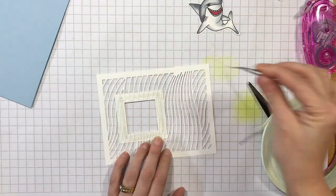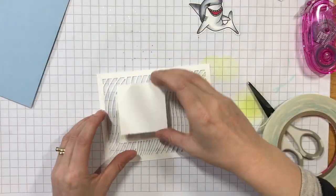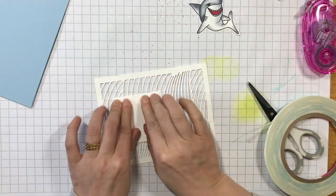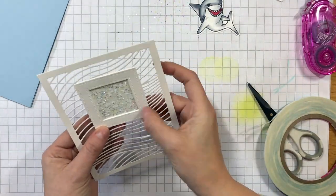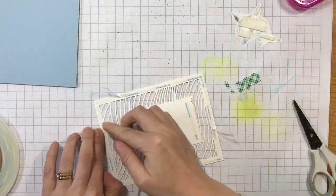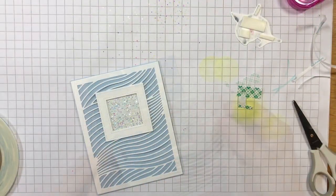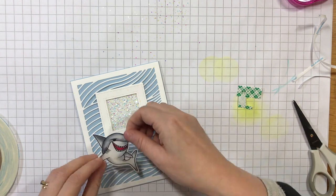I already had a bunch of my favorite little shark friends colored with Copics, so I just had to add some foam tape to the back ready for him to be placed on the front of the card. So I adhered the wave panel to the blue card base and then popped the shark onto the front.